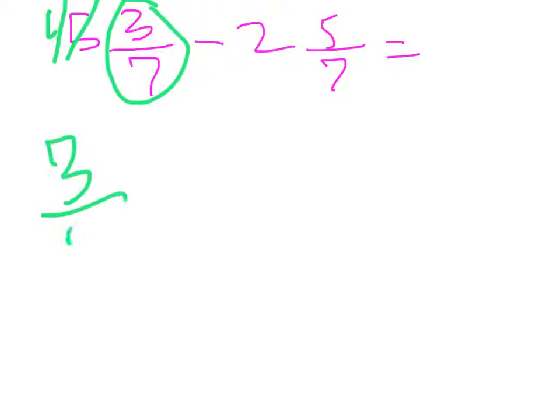Then you take this fraction. The borrowed 1 equals 7 sevenths. 3 sevenths plus 7 sevenths equals 10 sevenths.